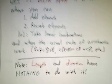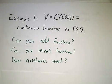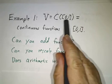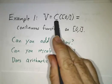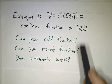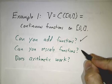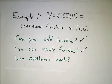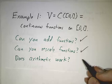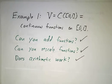So, for example, let's consider functions. We'll have functions on an interval. Whenever we see c parentheses some set, it means functions of that set, and continuous functions. So we have continuous functions on the interval 0 to 1. Well, does it make sense to add two functions? Sure. Can you multiply a function by a constant? Sure. Do the usual rules of arithmetic work? Sure. That's a vector space.